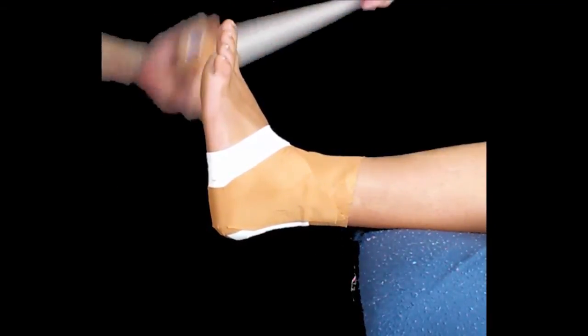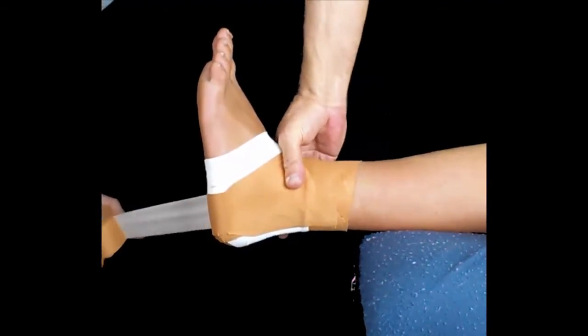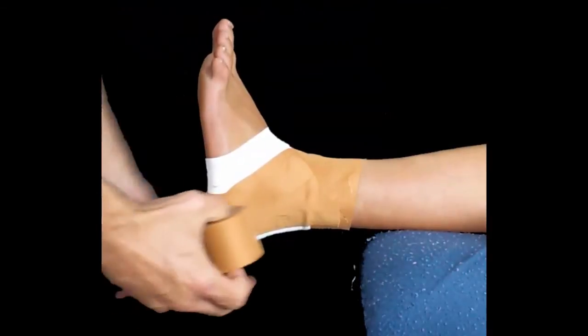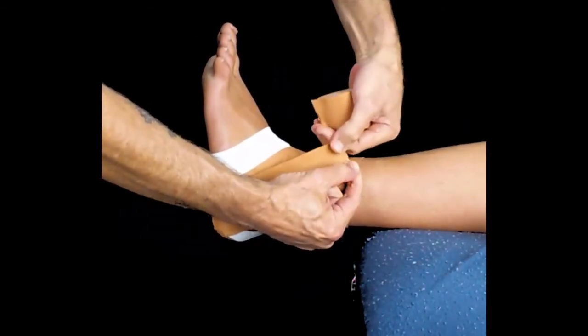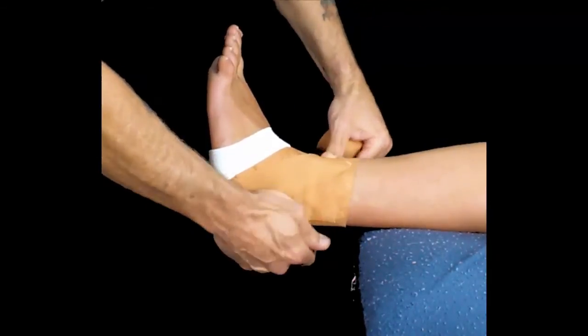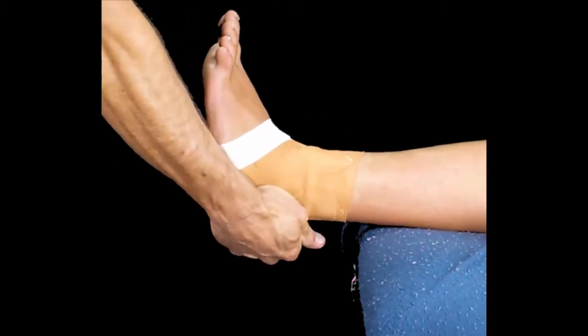Our third figure six starts on the inside again and goes back around to where we started. Take the time to do the job neatly. Make sure there are no creases and the tape is stuck down.